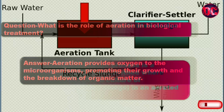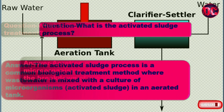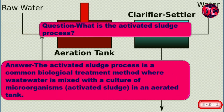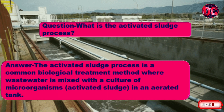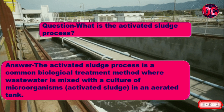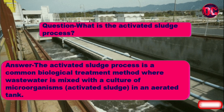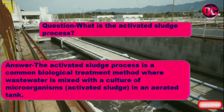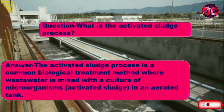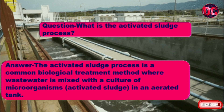Question: What is the activated sludge process? Answer: The activated sludge process is a common biological treatment method where wastewater is mixed with a culture of microorganisms, activated sludge, in an aerated tank.